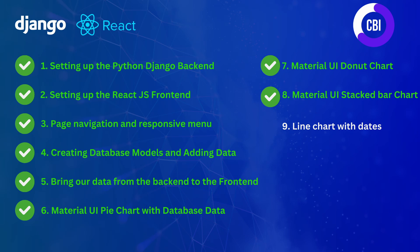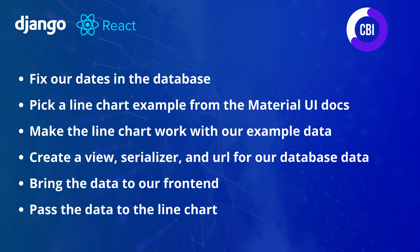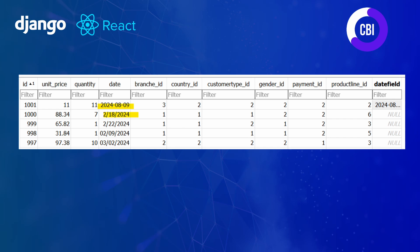In this video we're going to create a line chart with database data from Material UI Charts. It will display the quantity sold per country over different months. To do that we're going to follow six steps: fix our dates in the database, pick a line chart example from the Material UI documentation, make it work with example data, create a view, serializer and URL for the backend data, bring that data to the frontend, and finally pass the data to the line chart.